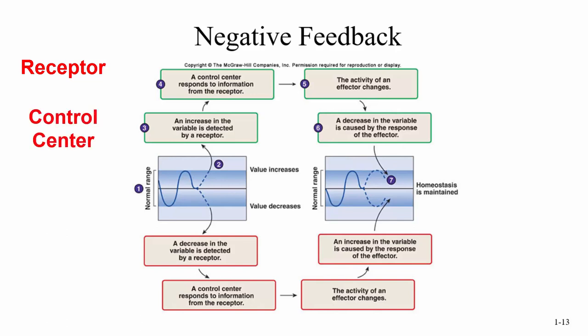Then we have to have a control center. Typically our control center is our brain, though there are others. In the thermostat, the thermostat itself is the control center — that's the brains. The receptor (thermometer) feeds information to the control center, which makes a decision about what to do. Then we have an effector — what is going to make the change happen. In the thermostat, the effector is your HVAC unit, your heating and air conditioning unit.